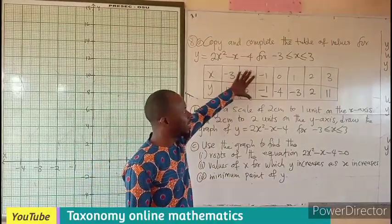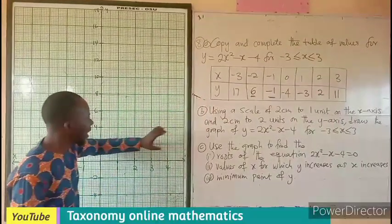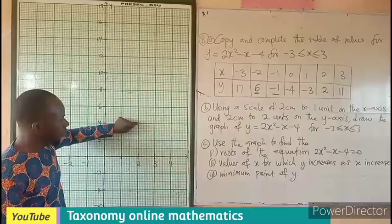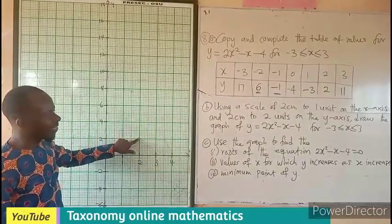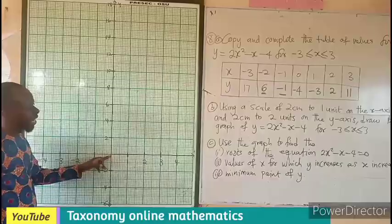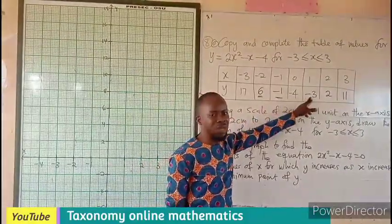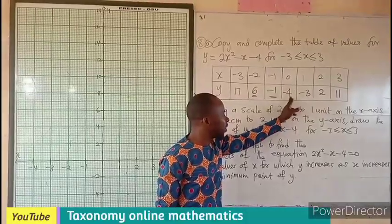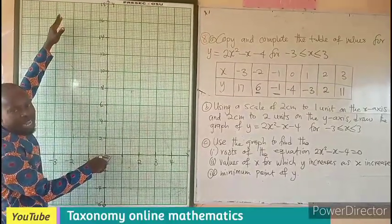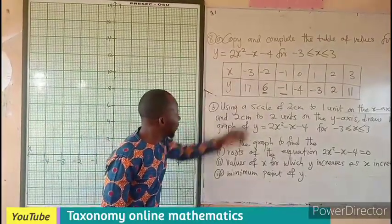Now we'll plot on the graph using the given conditions: 2 centimeters (the bigger box) equals 1 unit. From here to here is 1, then 1, 2, 3 on the x-axis. This is the origin: 0, 1, 2, 3. The graph is tilted down because on the y-axis we have more positive values than negative values. We have only 3 negative values with the highest being negative 4. So we need to tilt the graph down to fit all the values.